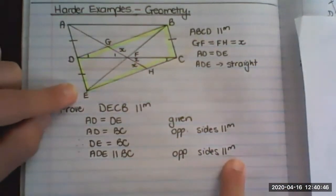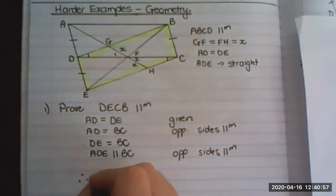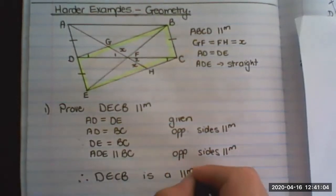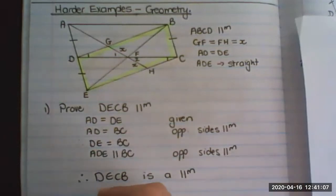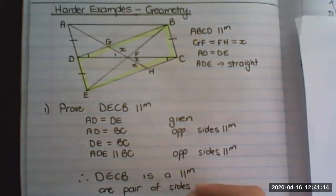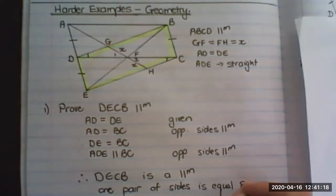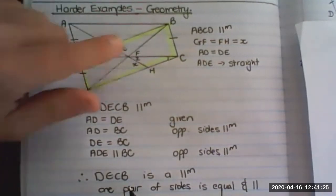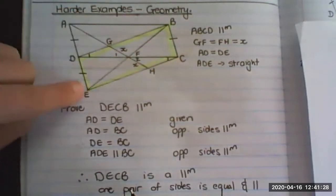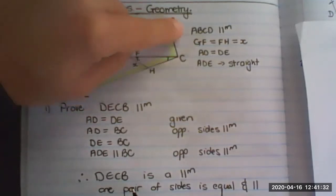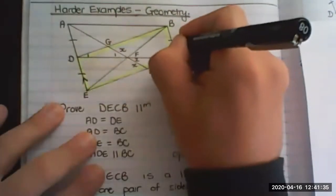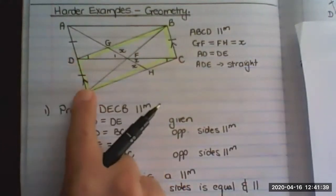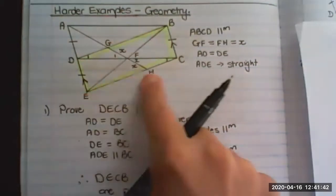Therefore we can say DECB is a parallelogram because one pair of sides is equal and parallel. What I have proven is that DE is equal to BC and DE is parallel to BC. Because one set of lines are equal and parallel, then that whole figure is a parallelogram.